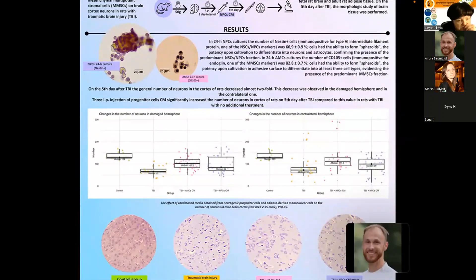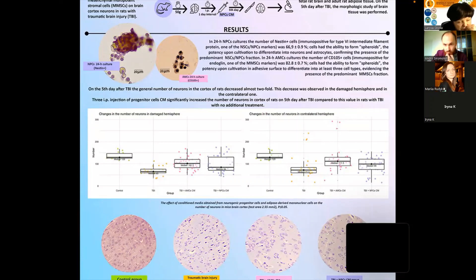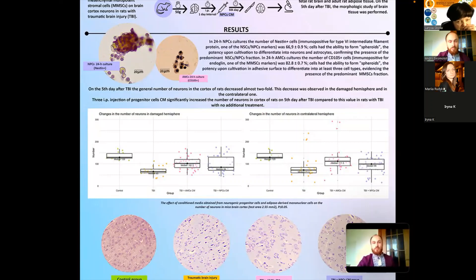And here on the graph we can see the data after all these analyses. Here data are represented as the median with a quartile interval between 25th and 75th percentiles. In general, the general number of neurons in the cortex of rats decreased almost twofold. Here you can see the decrease in the damaged hemisphere and in the contralateral one. The medians are correspondingly 65 and 72 compared to 129 in control group.